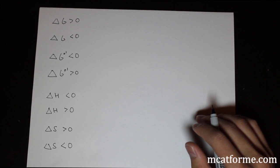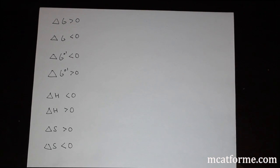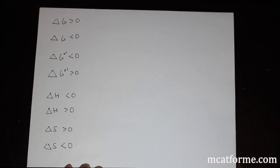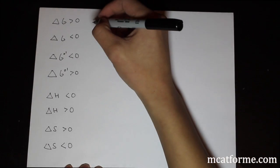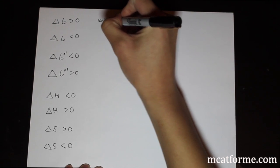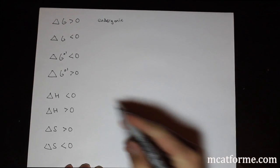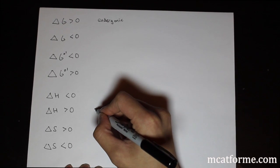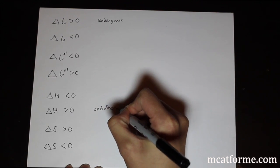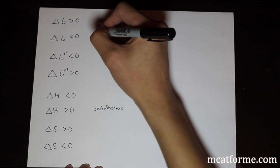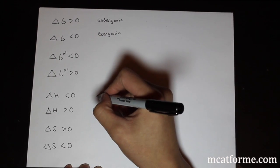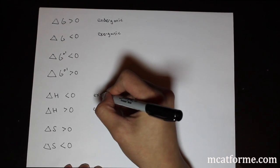Here's a quick overview: if ΔG is greater than zero, the reaction is endergonic; if ΔG is less than zero, it's exergonic. For enthalpy: if ΔH is greater than zero, it's endothermic; if ΔH is less than zero, it's exothermic.